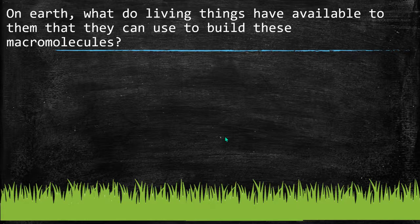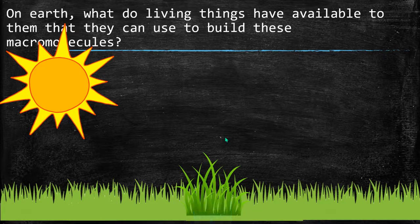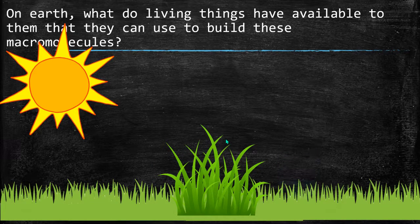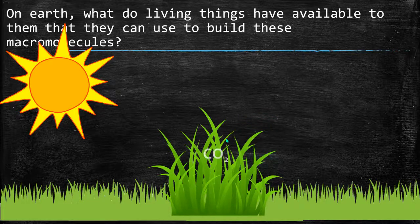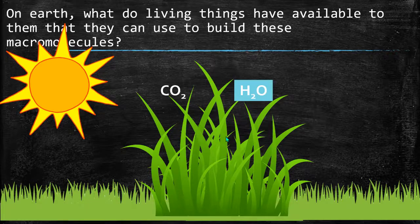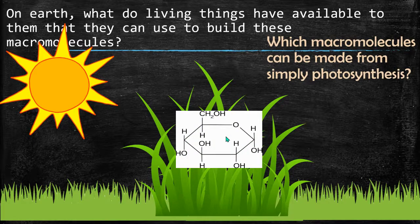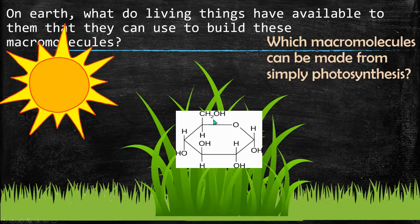I have individual videos on each of these topics if you want more details. When we look at macromolecules in life and how they're built from matter on Earth, this is one of the big points about matter being recycled. Plants use carbon dioxide and water during photosynthesis — CO2 and H2O — and they rearrange those atoms into a molecule of glucose, which contains carbon, hydrogen, and oxygen.